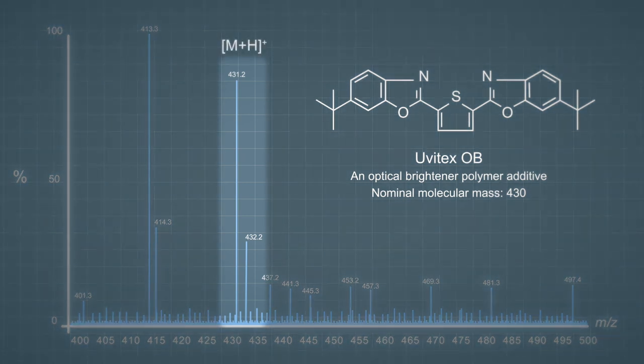At mass-to-charge 431 we can see a nice intense peak at that mass-to-charge. We can also see a small amount of sodium adduct ions at 453. When doing an analysis using ESI, we need to look out for the formation of different adduct ions.